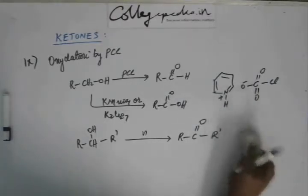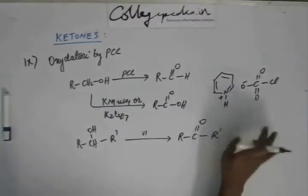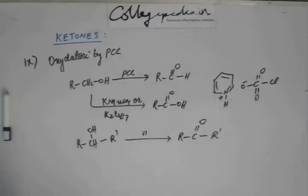So it has two parts. PCC has pyridinium as the cationic form and chlorochromate as anionic form. So this is PCC, pyridinium chlorochromate.